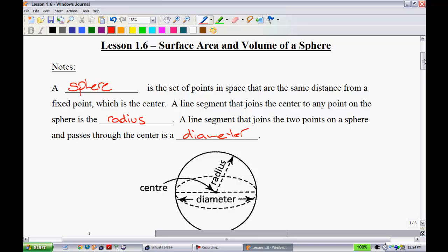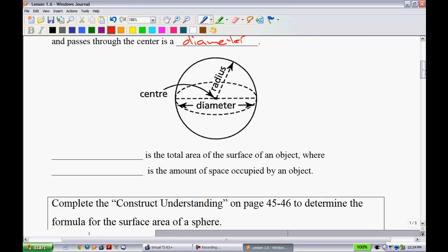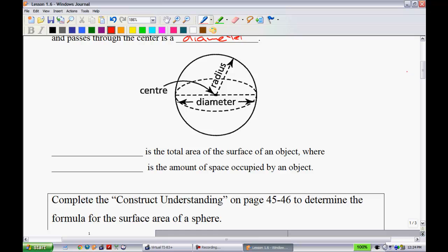And so I have a very basic diagram right there where you can take a look at that. Of course, there is an infinite amount of radii and diameter through a sphere. All right, the surface area is the total area of the surface of an object where the volume is the amount that it occupies.